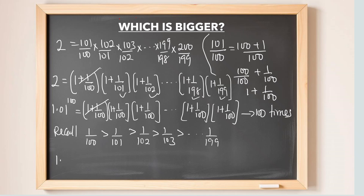This shows that 1.01 to the power of 100 is greater than 2. For every factor in the product, the terms from equation 1 are greater than the corresponding terms in equation 2. And if you use the exact value, 1.01 to the power of 100 is approximately 2.7, which is indeed greater than 2. This confirms the result.